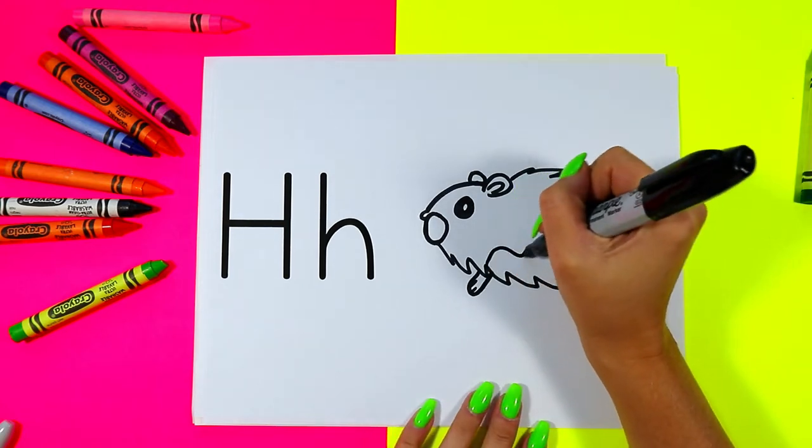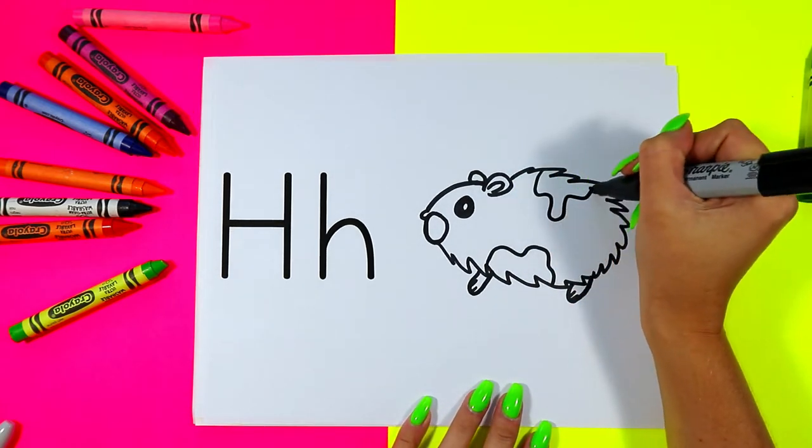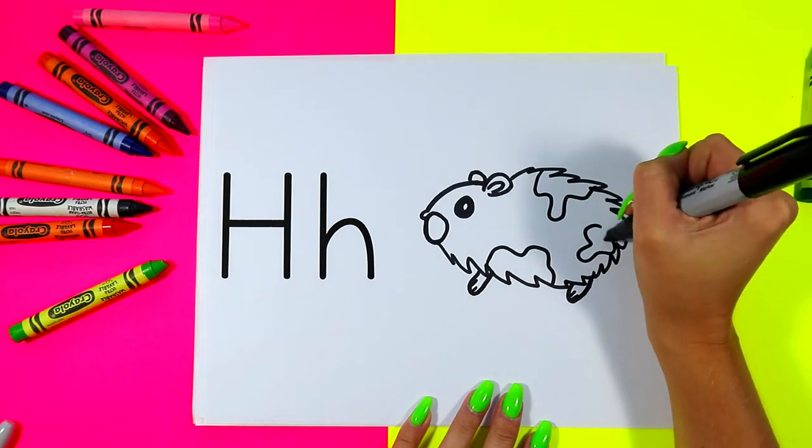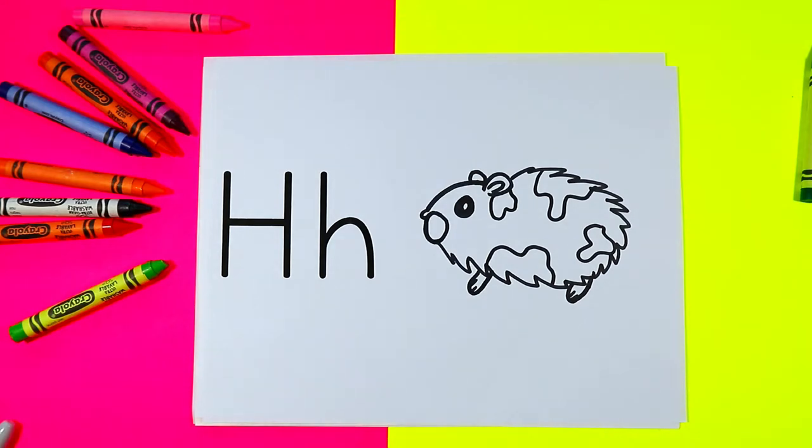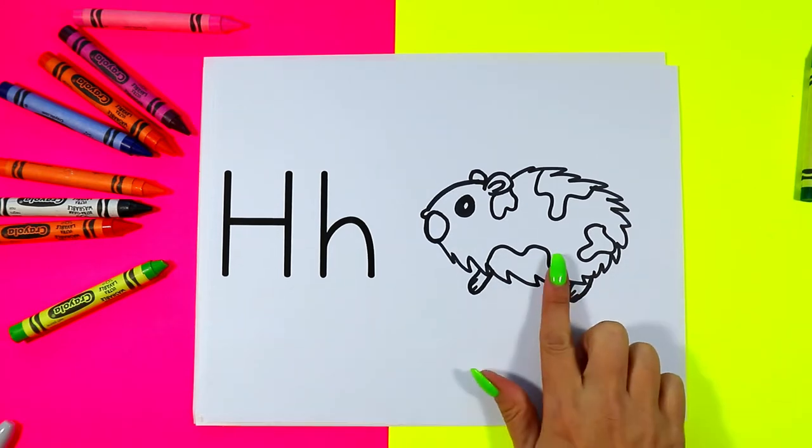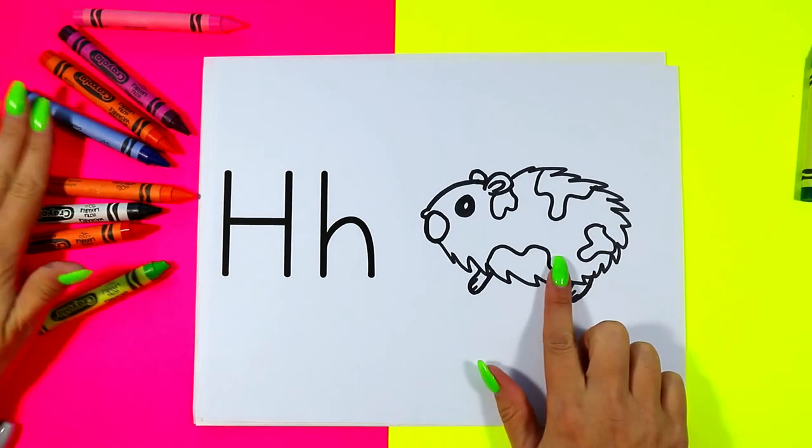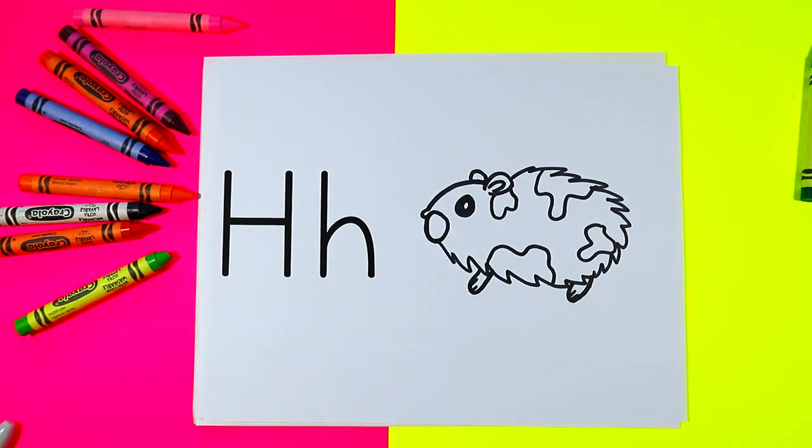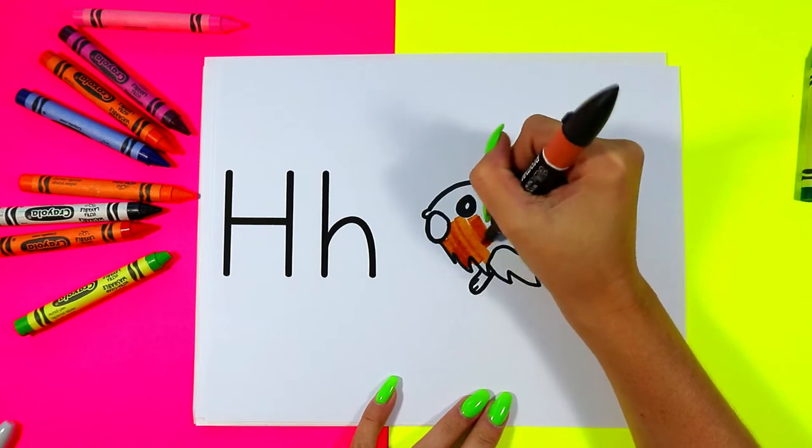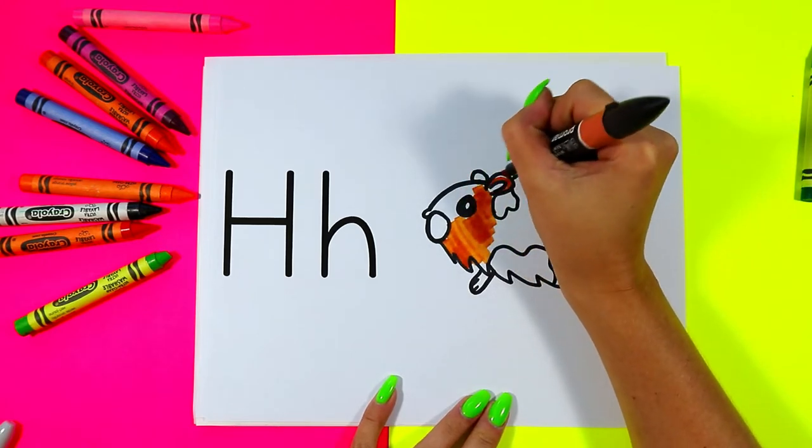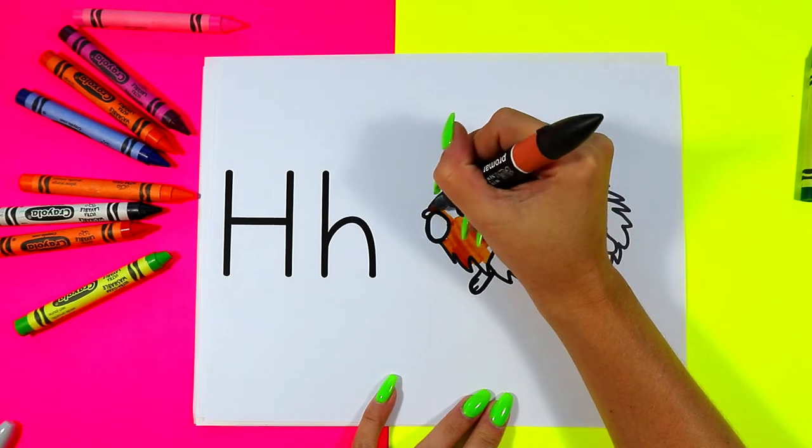Then we can go ahead and add spots on our hamsters because hamsters have lots of different colours on them and they come in different colours. So I'm going to add some spots on my hamster. And you can go ahead and choose any colour you want to colour in your hamster and choice of art making mediums. And we're going to colour in our hamsters. And remember hamsters can be any colour. So have fun and pick your choice of hamster colours. And go ahead and colour in your cute little hamster.